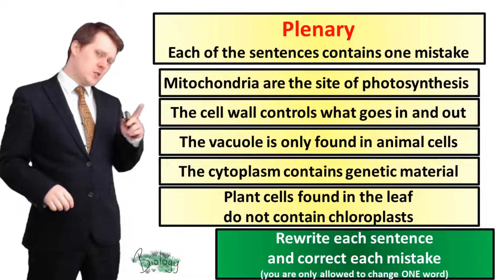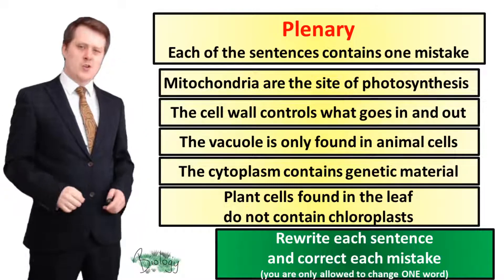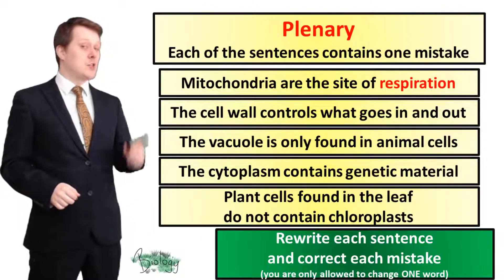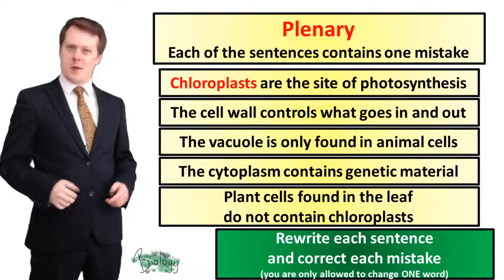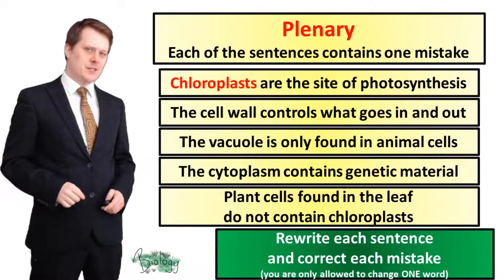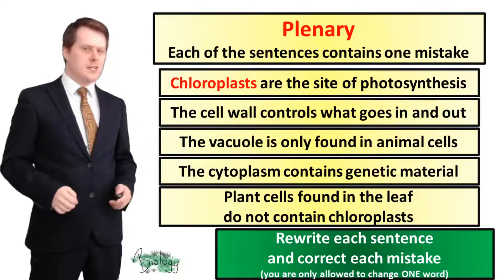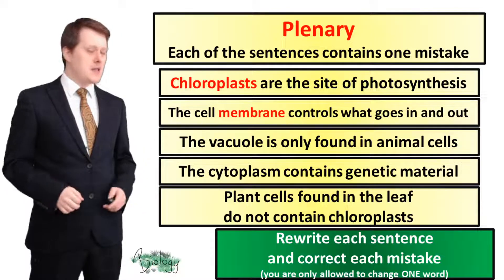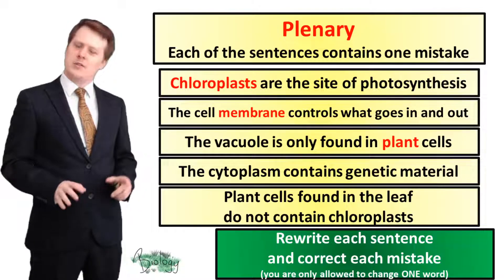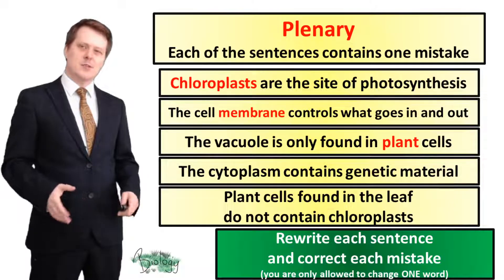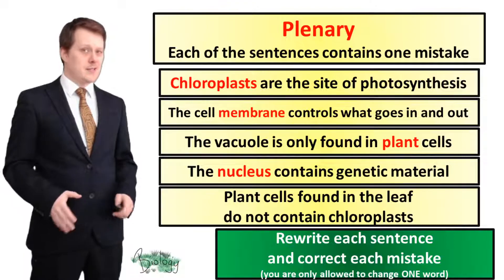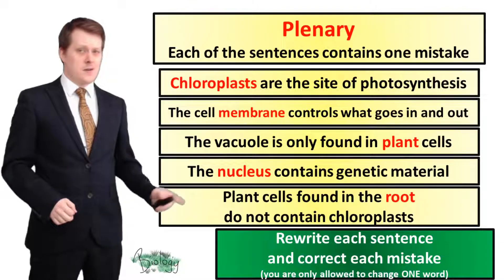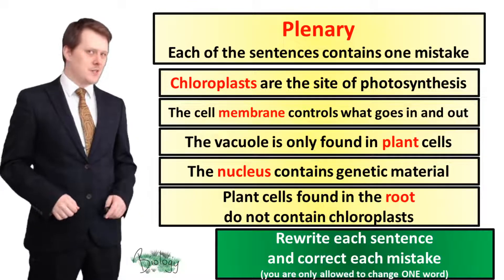Have you corrected those mistakes? Starting at the top: 'Mitochondria are the site of photosynthesis' — no, mitochondria are the site of respiration. There is another answer though: you could have also said chloroplasts are the site of photosynthesis. 'The cell wall controls what goes in and out' — no, the cell membrane controls what goes into and out of a cell. 'The vacuole is only found in animal cells' — no, the vacuole is only found in plant cells. 'The cytoplasm contains genetic material' — no, the nucleus contains genetic material. 'Plant cells found in the leaf do not contain chloroplasts' — no, it's the plant cells found in the root which don't contain chloroplasts.